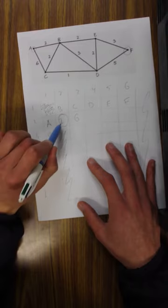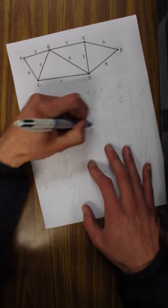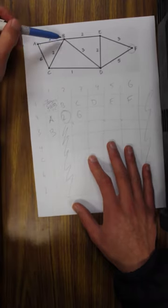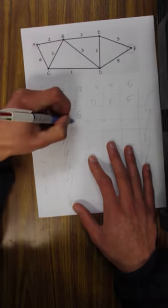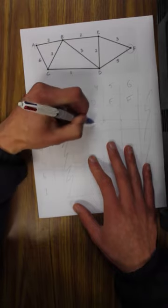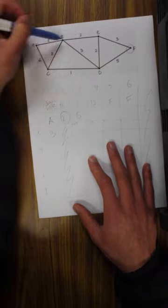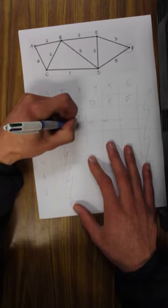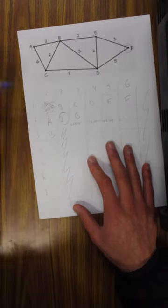Now we've already traveled two steps, so you put two here to not forget that. Where can we go to from B? Well from B we can go to C, two plus two, or we can go to D, two plus three, or we can go to E, two plus two. Two plus two is four, two plus three is five, two plus two is four.